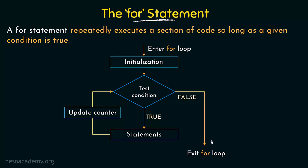We see three important things. One is the initialization part, where the variable or counter is going to be initialized. Then we have the test condition where the condition will be checked. Then we have the update counter part where the counter will be updated and the condition checked again. These are the three important things: the initialization, the test condition, and the update counter part.